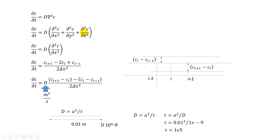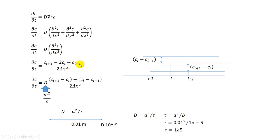The Laplacian ∇² is ∂²/∂x² + ∂²/∂y² + ∂²/∂z² in three dimensions. For simplicity, let us think in one dimension with only the x coordinate. If you recall the finite difference discretization of this second-order term, it comes out as: (c_{i+1} − 2c_i + c_{i−1}) / δx².